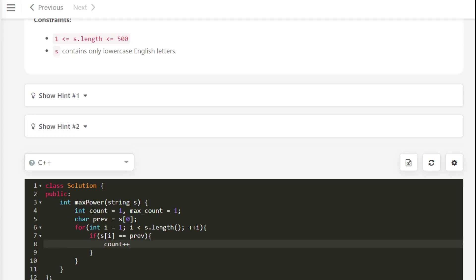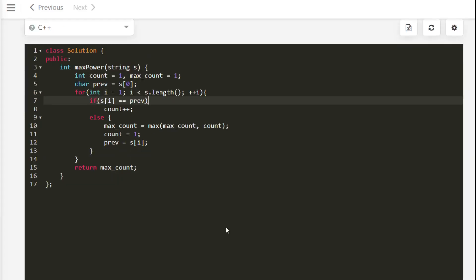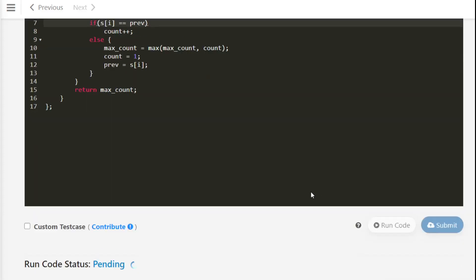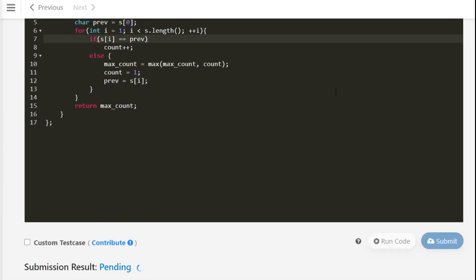Else we found a new character, so we will update the max count. Max count equal to max of max count and the count. And we reset count to one and previous equal to s[i]. And here we will return max count.